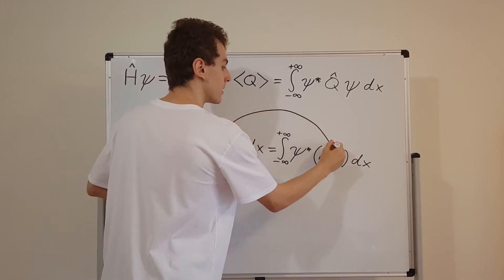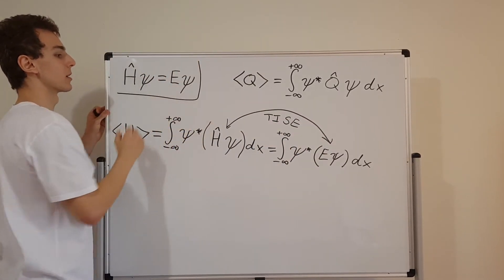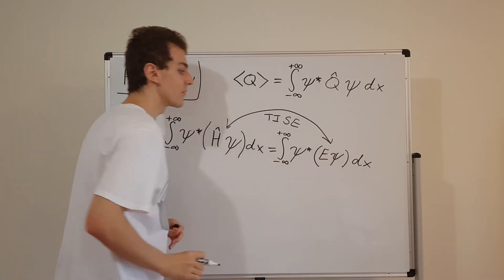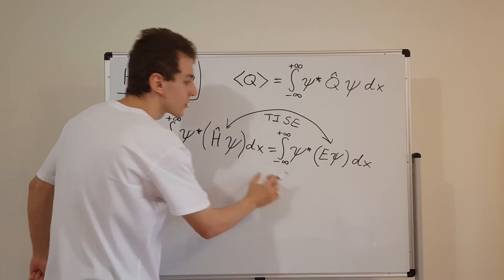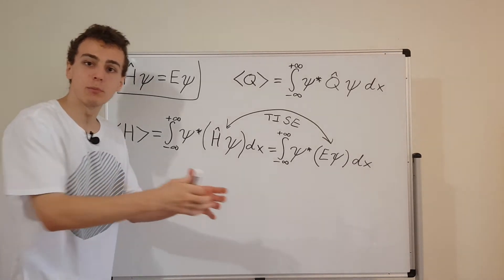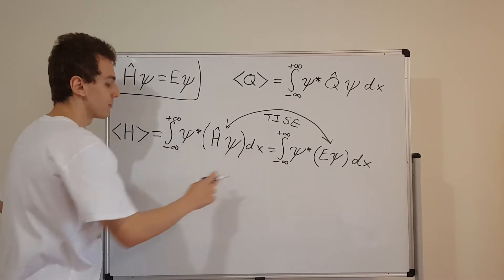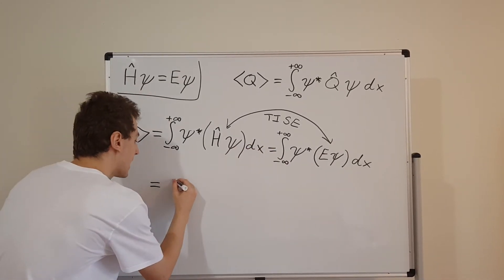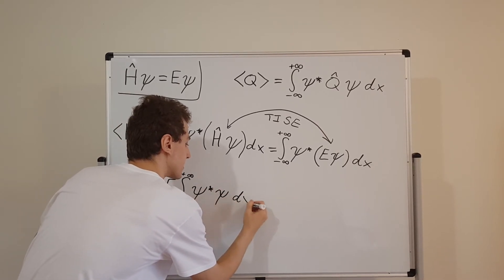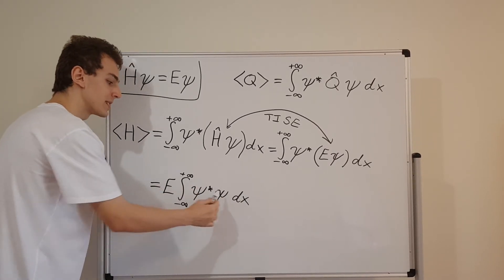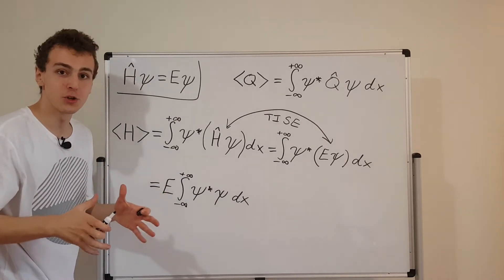So we can replace the Hamiltonian acting on psi by its eigenvalue E, giving us the integral from minus infinity to plus infinity of little psi-star times E times psi dx. Now we can pull this constant E out of the integral — constants can always be pulled out since no derivatives act on them. That gives us E times the integral from minus infinity to plus infinity of psi-star times psi dx. Now, psi-star times psi is just the wave function's square magnitude, or the probability density function, as found in Part 1 of this mini-series.